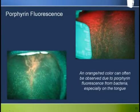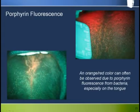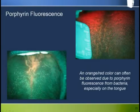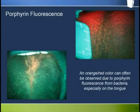Here we see two examples of the orange-red color from the porphyrin fluorescence generated by bacteria. The tongue is the area in the mouth most commonly observed, and it's quite common for bacteria to get trapped amongst the carpet of filiform papilla or in the fissures that can sometimes develop, as can be seen in the lower photograph.